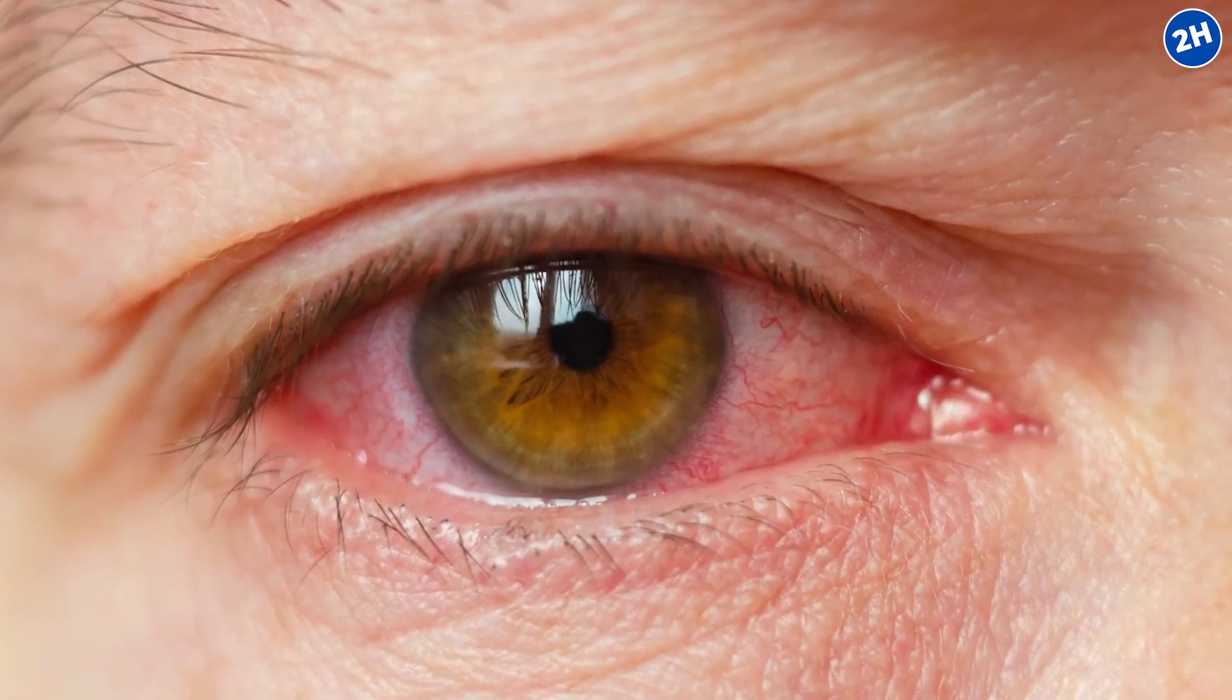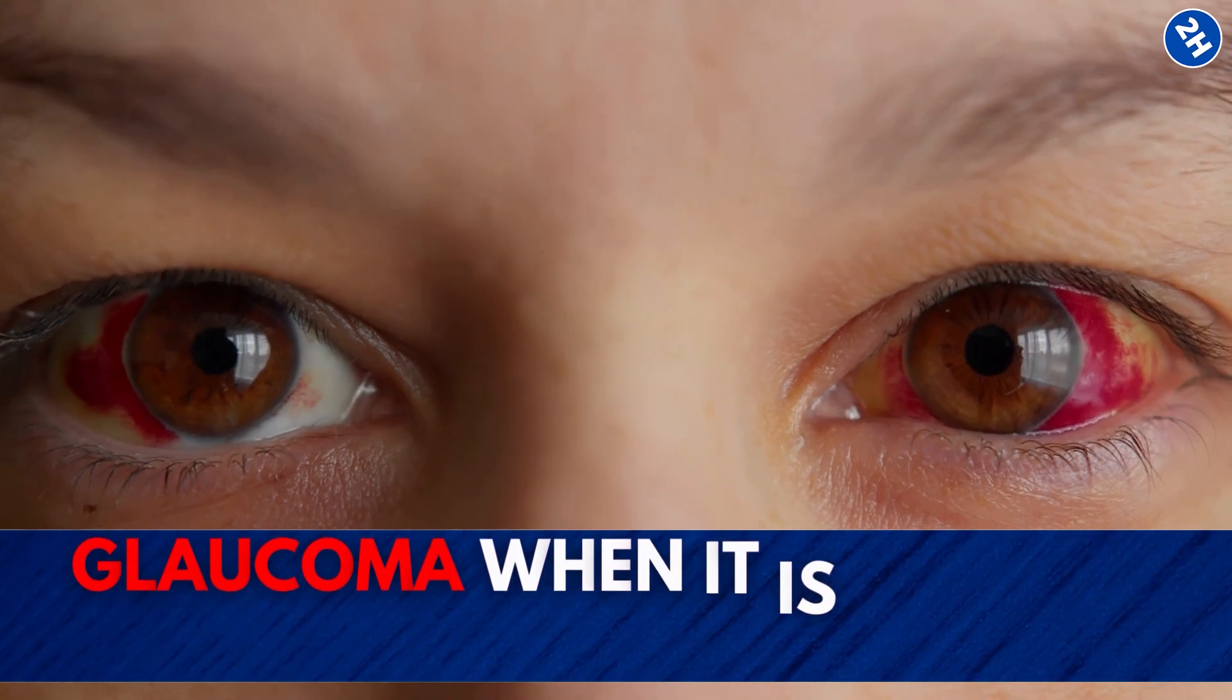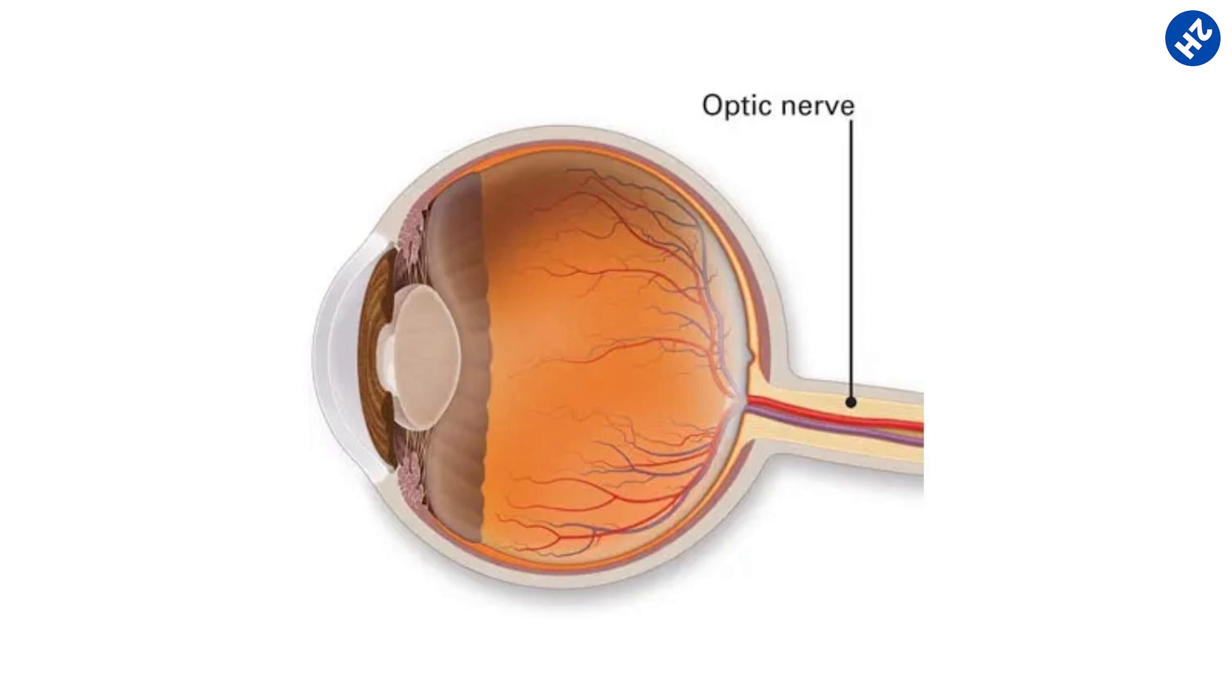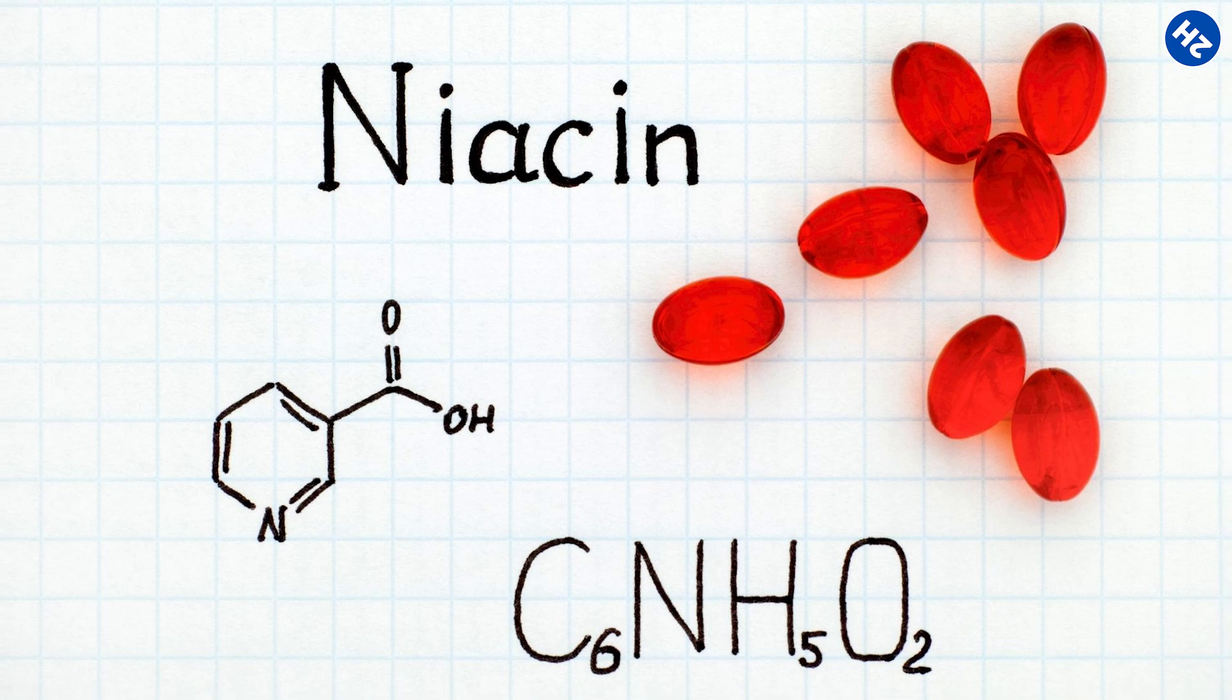Since it progresses slowly and without any obvious symptoms, many people find out they have glaucoma when it is already in the serious stage. The most effective approach is to try to prevent optic nerve injury in the first place, and for that, an adequate dose of niacin is essential.